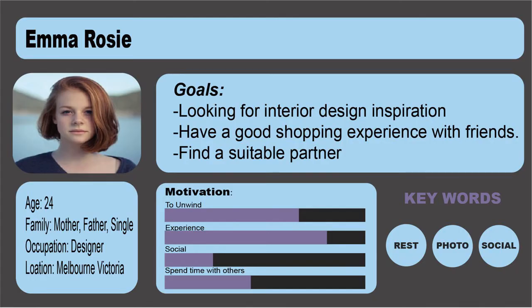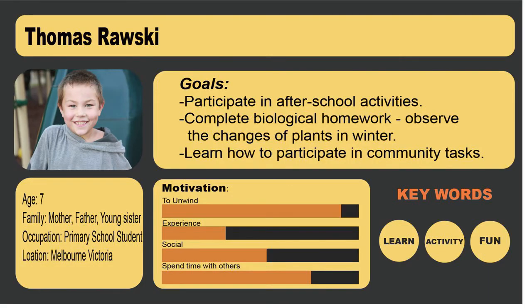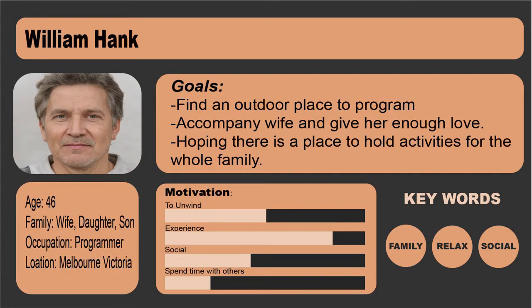Emma is a 24-year-old designer who came to participate in this event looking for interior design inspiration, to have a good shopping experience with her friends, and to find a partner. Thomas is a 7-year-old primary school student whose goal is to participate in after-school activities, complete biological tasks observing seasonal changes, and learn how to participate in community tasks. William is a 46-year-old programmer who wants to find an outdoor place, accompany his wife, and hopes there is a place to hold activities for the whole family.